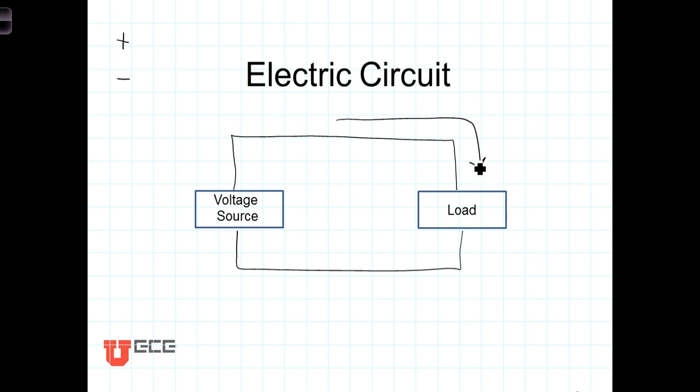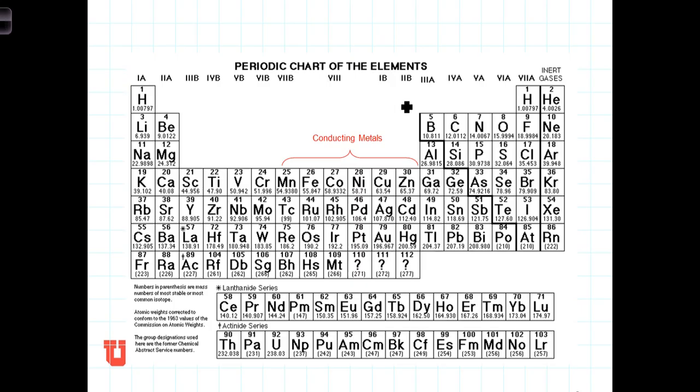And that flow of electrons is known as current. We also pointed out that you don't just have one connector going from the voltage to the load, but you've got to have a return trip. There's got to be a complete circuit in order for the electricity to flow.